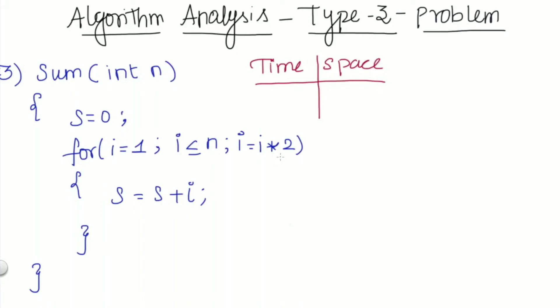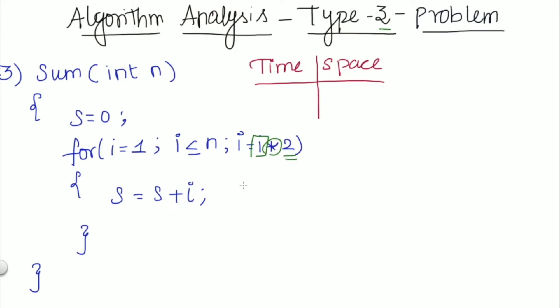Hello everyone, welcome back to my channel. In this series of algorithm analysis, next we are going to analyze the third type of problem — that is when the loop variable is multiplied by some constant.